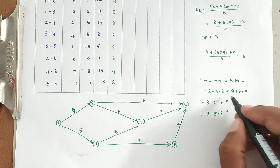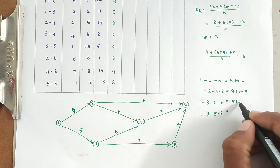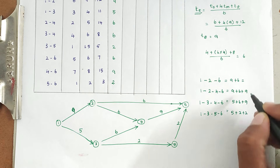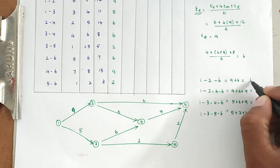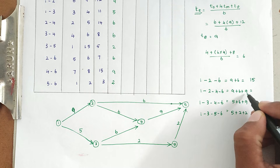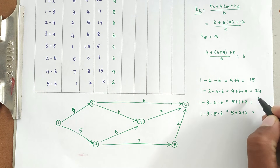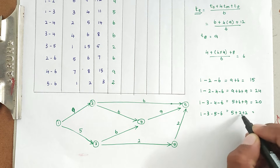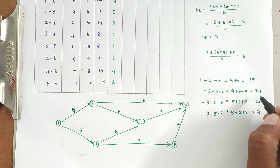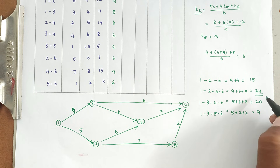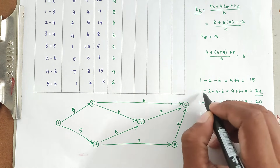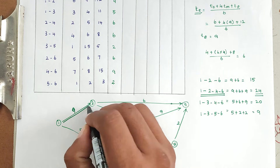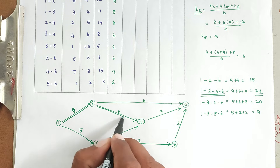Path 1-3-4-6 = 5 + 6 + 9 = 20, and path 1-3-5-6 = 5 + 2 + 2 = 9. The durations are: 15, 24, 20, and 9. The path with the maximum duration is the critical path, so 24 is the maximum value. Therefore, 1-2-4-6 is the critical path, marked with a double line.